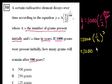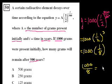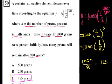And so that equals 1,000. What's 1 half to the third power? It's 1 eighth. 1 half times 1 half times 1 half. And so we get 1,000 divided by 8, which is 125. 125 grams are left in 900 years, and that is choice C. Next problem.